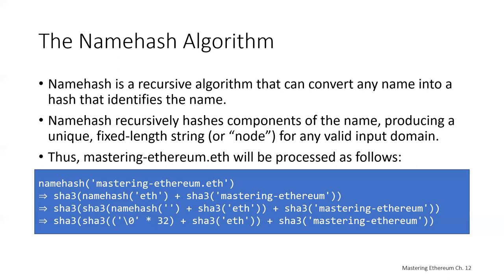Here's another example: using SHA-3 instead of Keccak and using mastering.ethereum.eth. We do SHA-3 of zero plus SHA-3 of .eth, then take SHA-3 of those together, and add it to a SHA-3 of mastering.ethereum. It's a very similar process — just a slightly different algorithm, as SHA-3 is slightly different from Keccak.